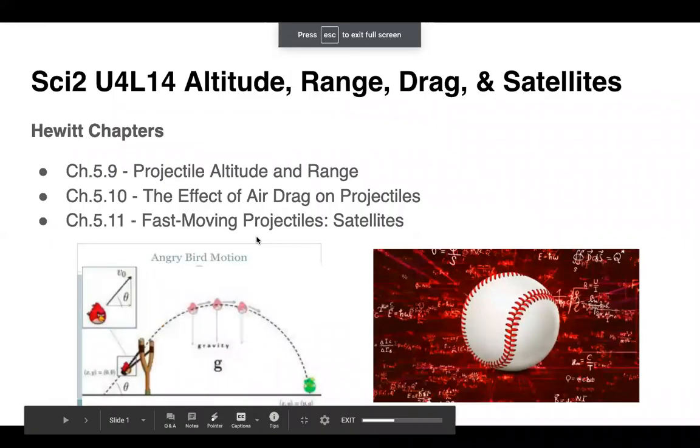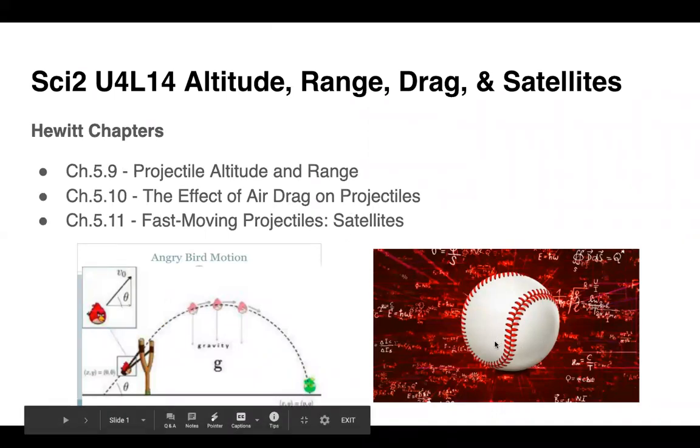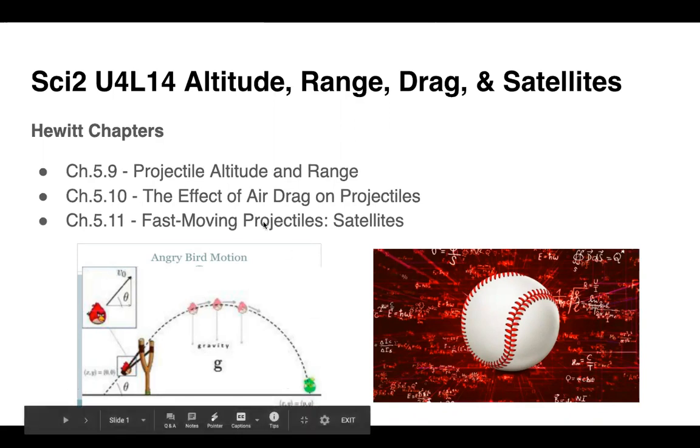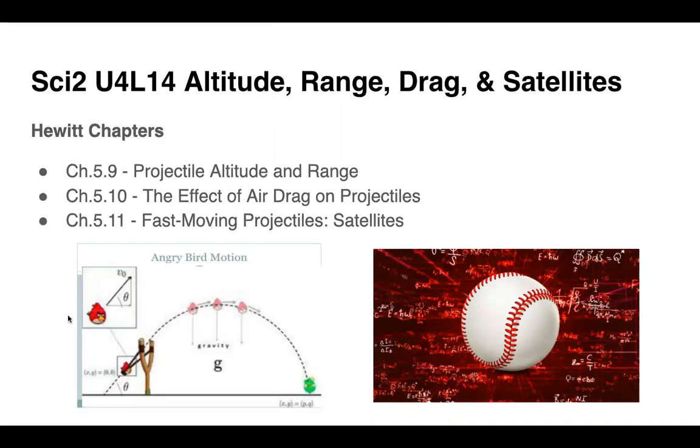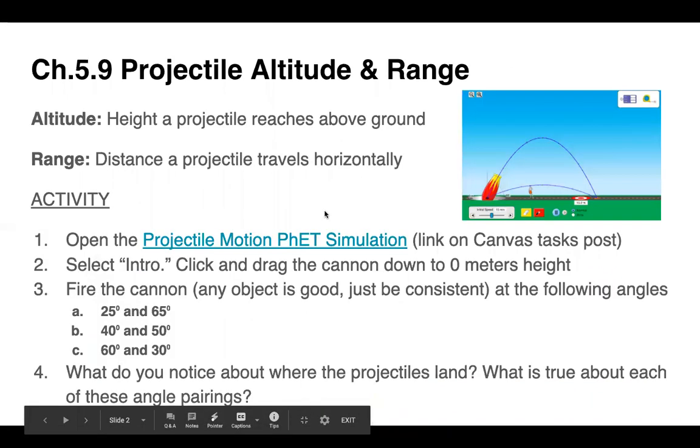This will be Chapter 5.9 through 5.11, talking about altitude range, the influence of drag on projectiles, and then talking about this idea of satellites. And it relates to sports like baseball. Golf is another one I'll talk about a lot. And also, a lot of you are probably familiar with a lot of this because of a particular phone game. Anyone know what this is representing here? Angry Birds. Yes. Angry Birds is all projectile motion. That's all it is. You're firing these bird projectiles and trying to knock out these little pigs. I don't know how exactly they simulate the physics within the game. It's actually usually pretty reliable, but that's what this is all about.